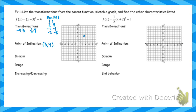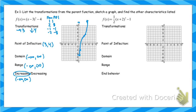Right 1 up 1, right 2 up 8 (which takes me off the graph up to 12), left 1 down 1, left 2 down 8. That gives my cubic function. Domain is negative infinity to infinity, range is negative infinity to infinity. Looking left to right, the y values are getting larger, so this graph is increasing from negative infinity to infinity.